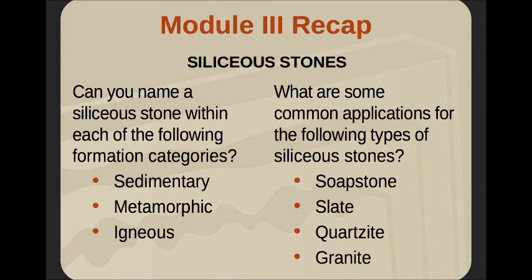Module 3 recap: can you name a siliceous stone within each formation category? Sedimentary — sandstone. Metamorphic — soapstone, slate, quartzite. Igneous — granite. Common applications: soapstone — countertop and chemistry lab; slate — flooring ideally; quartzite — great countertop material; granite — pretty much anything. You've passed Module 3.